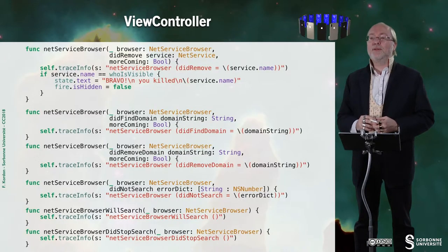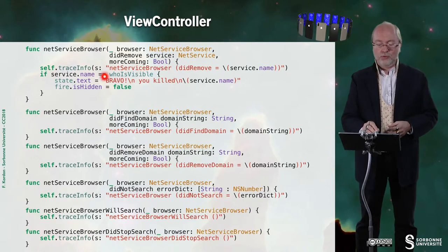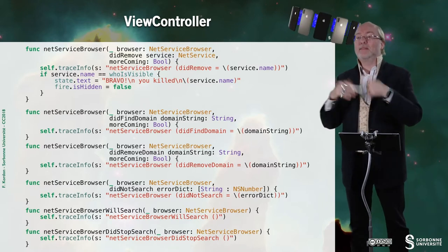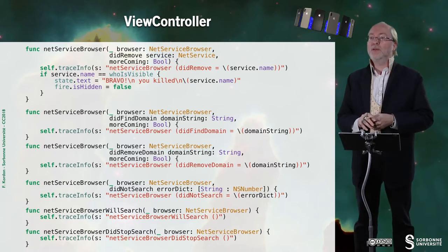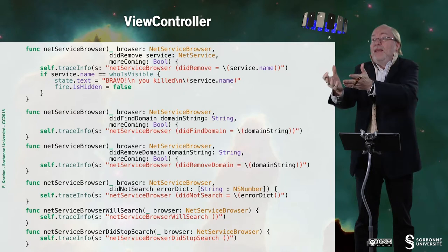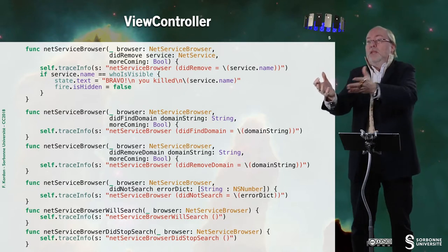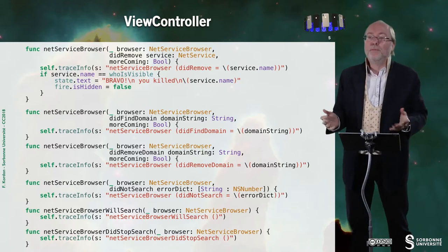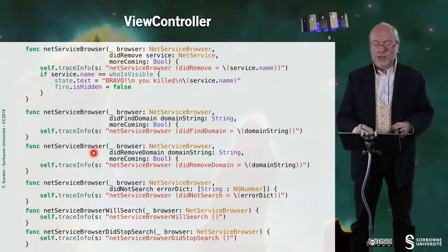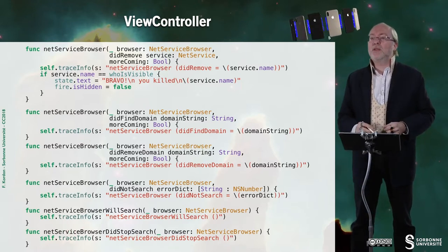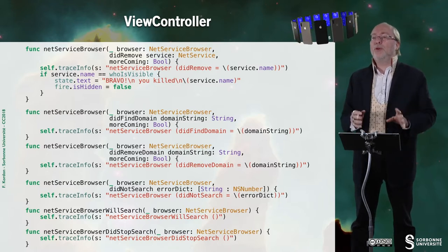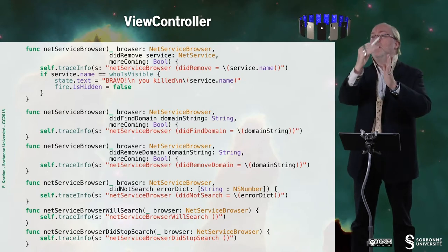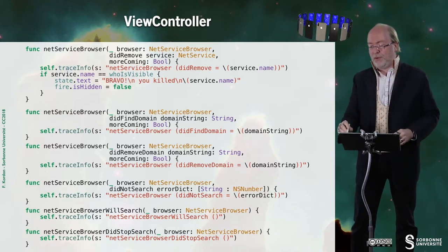When I detect that the other one has removed its service, it means I killed him, so I can state 'Bravo, you win' and show against who. The other methods of this protocol are just here to put some traces so you can see when they are invoked and in which order, but I'm not actually using them.